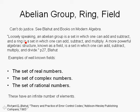Here's a direct quote from Blahut: loosely speaking, an abelian group is a set in which one can add and subtract. A ring is a set in which you can add, subtract, and multiply. A field is a more powerful algebraic structure in which you can add, subtract, multiply, and divide. We are going to use the field of finite elements, called a Galois field, which is the basis of Reed-Solomon codes, BCH codes, cyclic codes, etc.